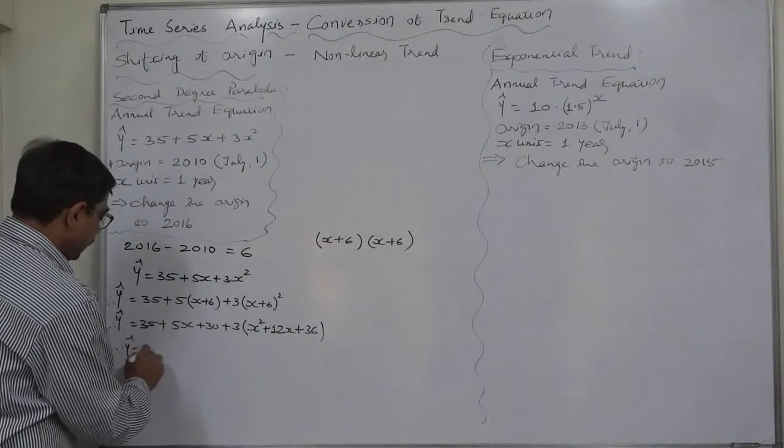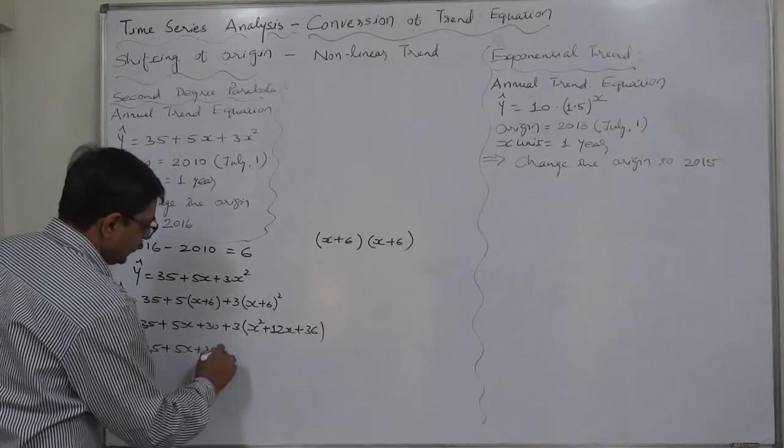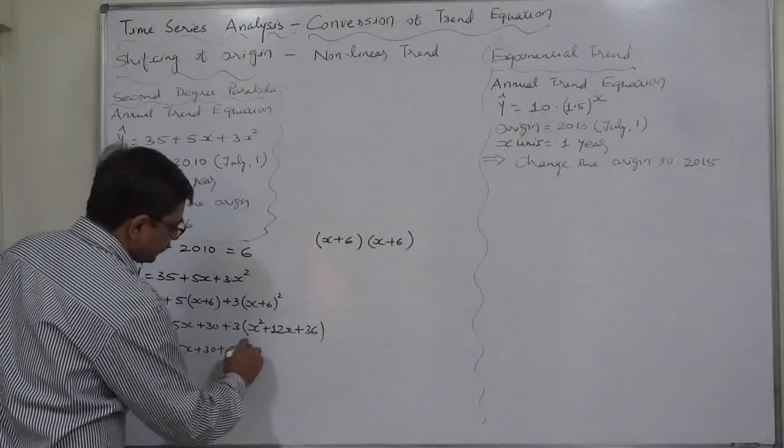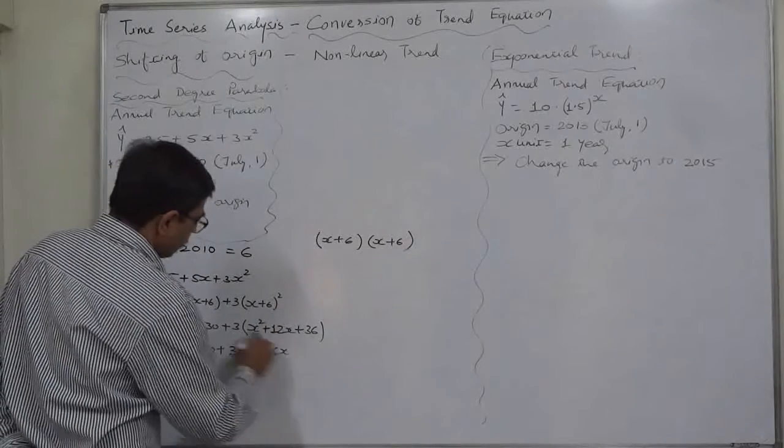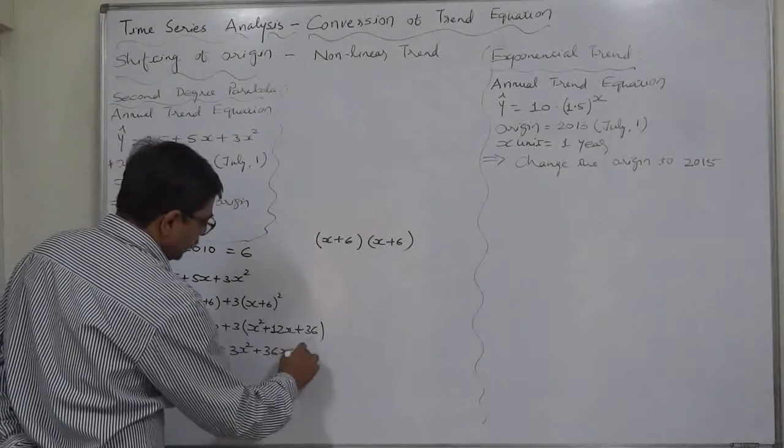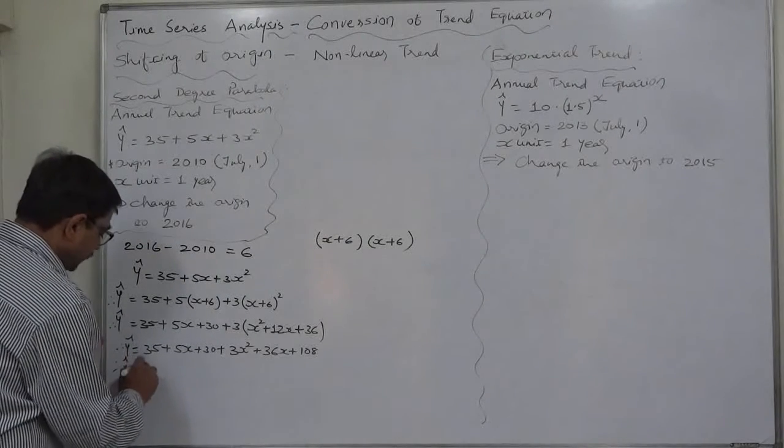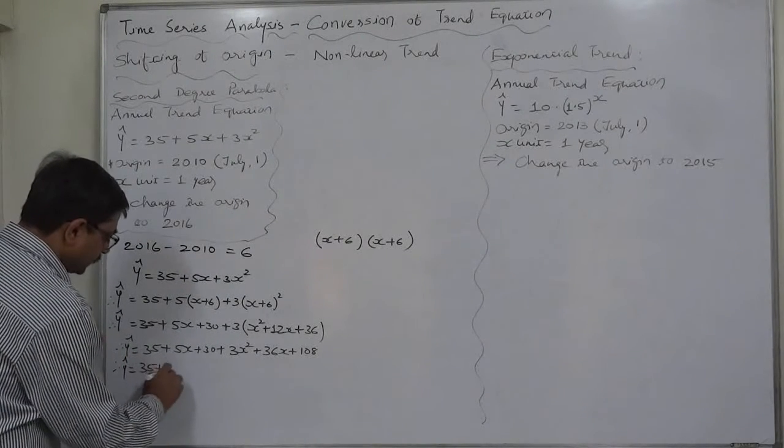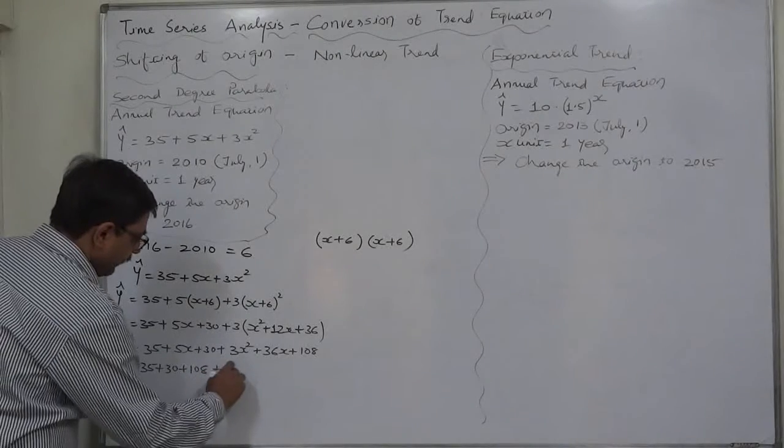So now it will be 35 plus 5x plus 30 plus 3x square plus 3 into 12 plus 36x plus 3 into plus 36 is 108.